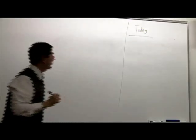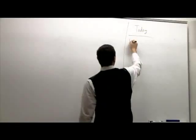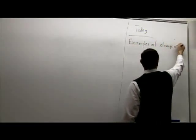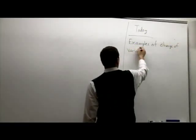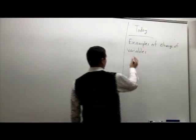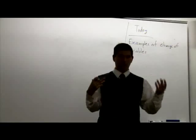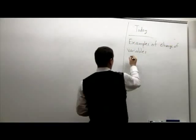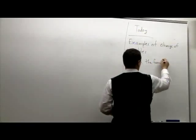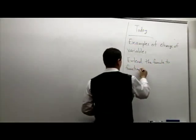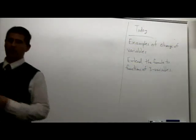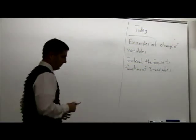Today we're going to do some examples of change of variables, so that we see how you might do that in practice. Last time we only looked at two-dimensional change of variables — functions of two variables. Now we're going to extend the formula to functions of three variables, and this will be in a completely trivial way. The formula, more or less, will be the same.